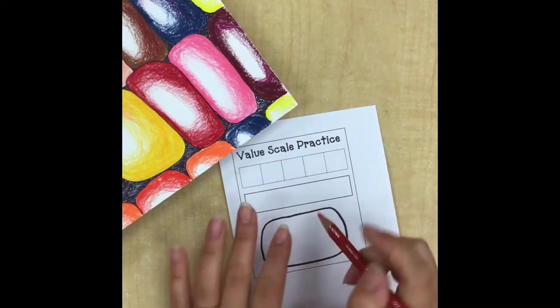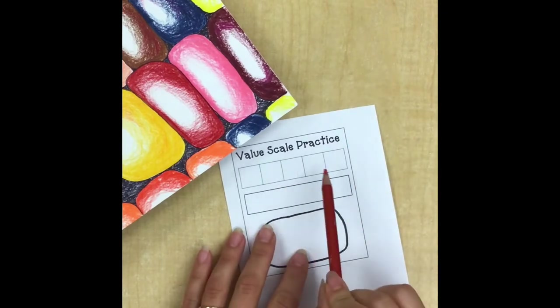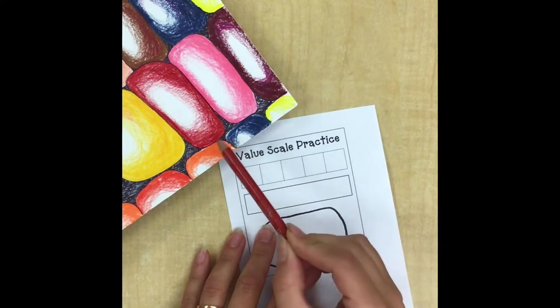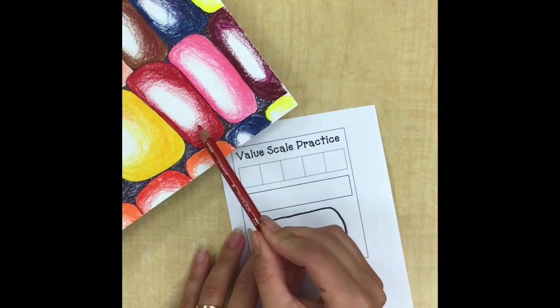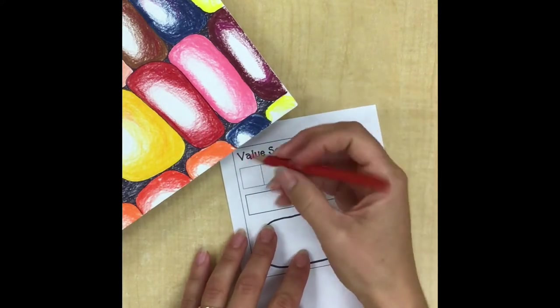This page is going to help us get ready for our Calico corn art project. When we do a value scale, we're going to use our pencil in some areas pushing hard to create a very dark value, and in some areas pushing lighter to create a more highlighted value. The first part of the value scale at the top, we're just going to practice using different pressures of our pencil.